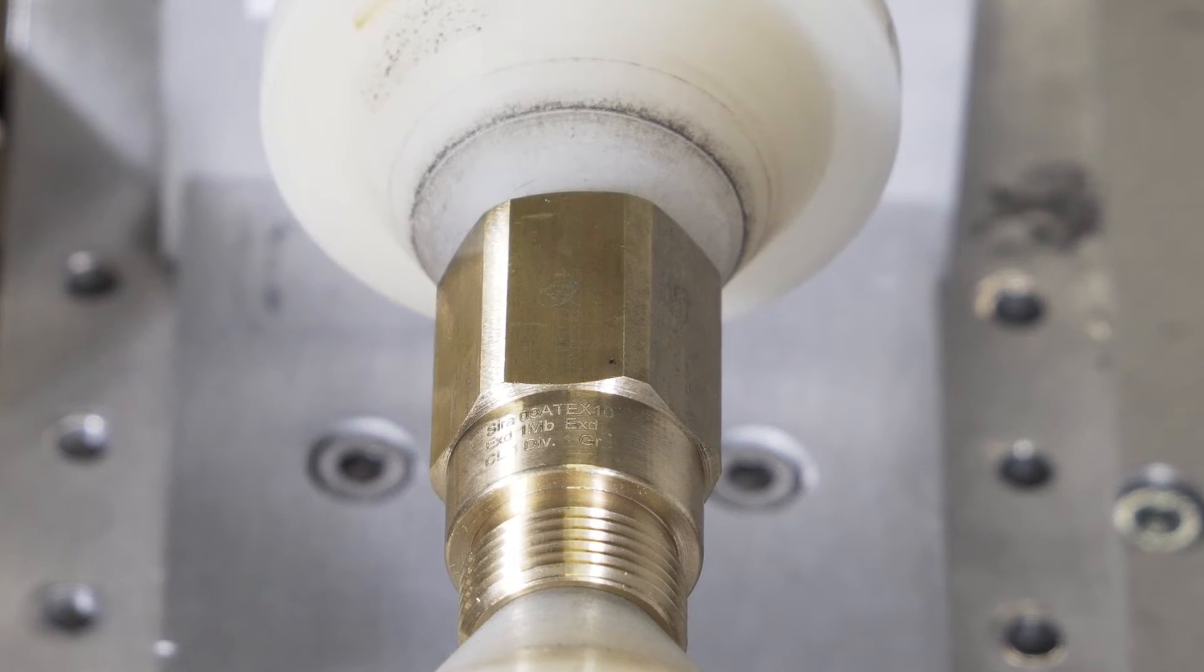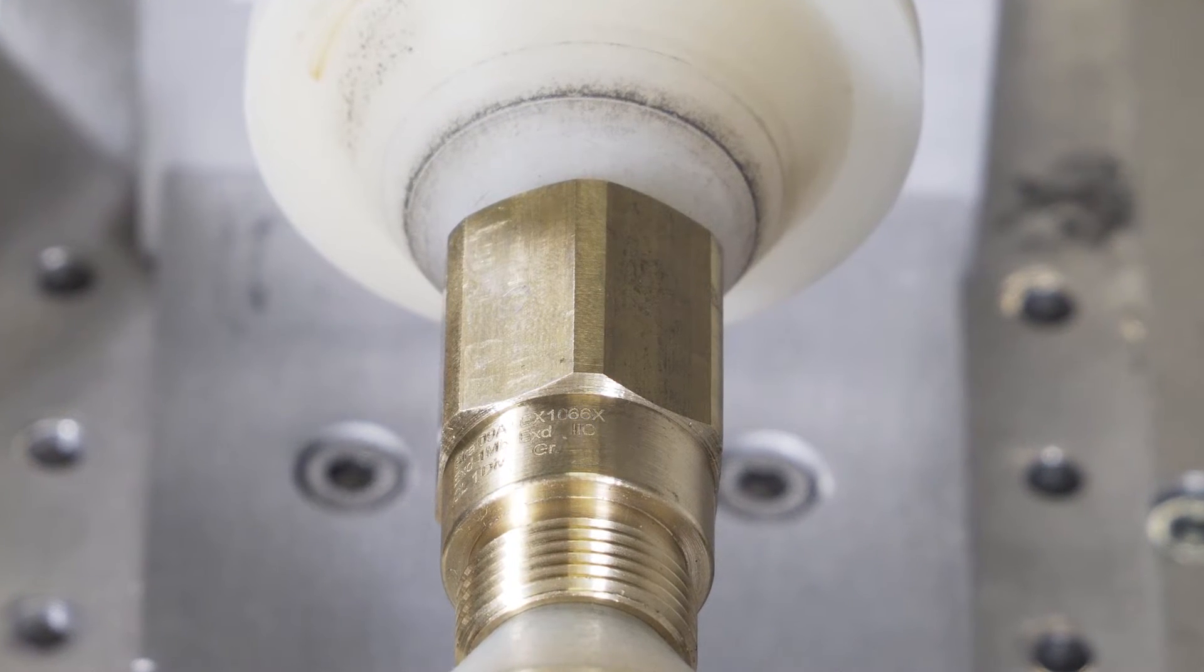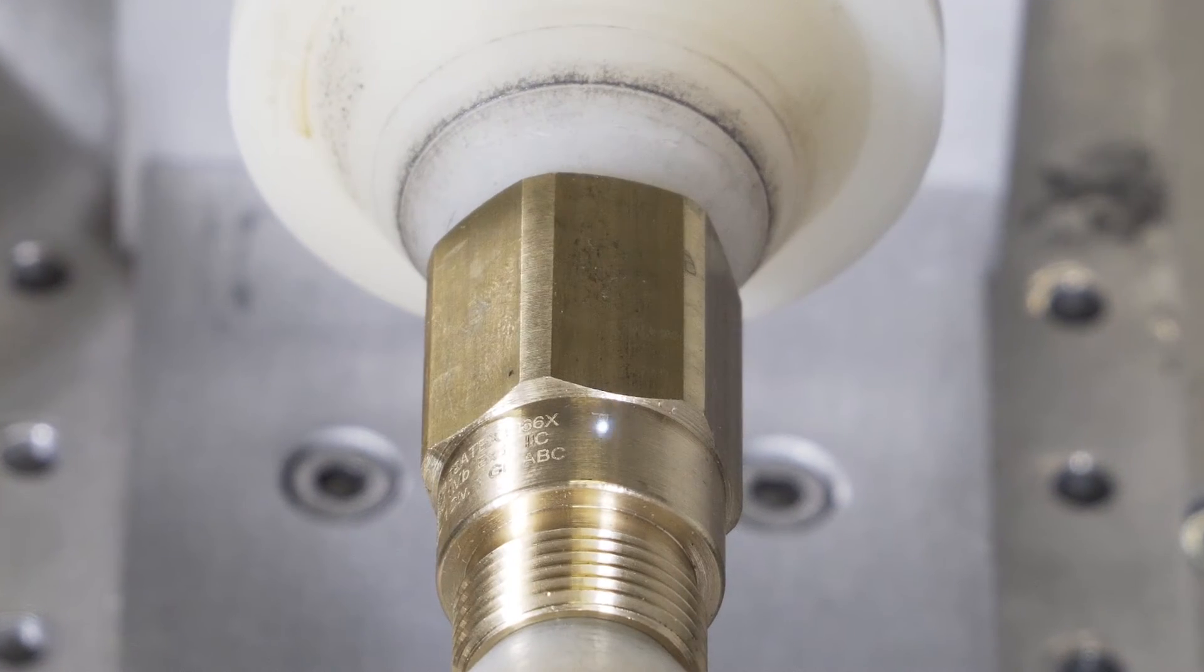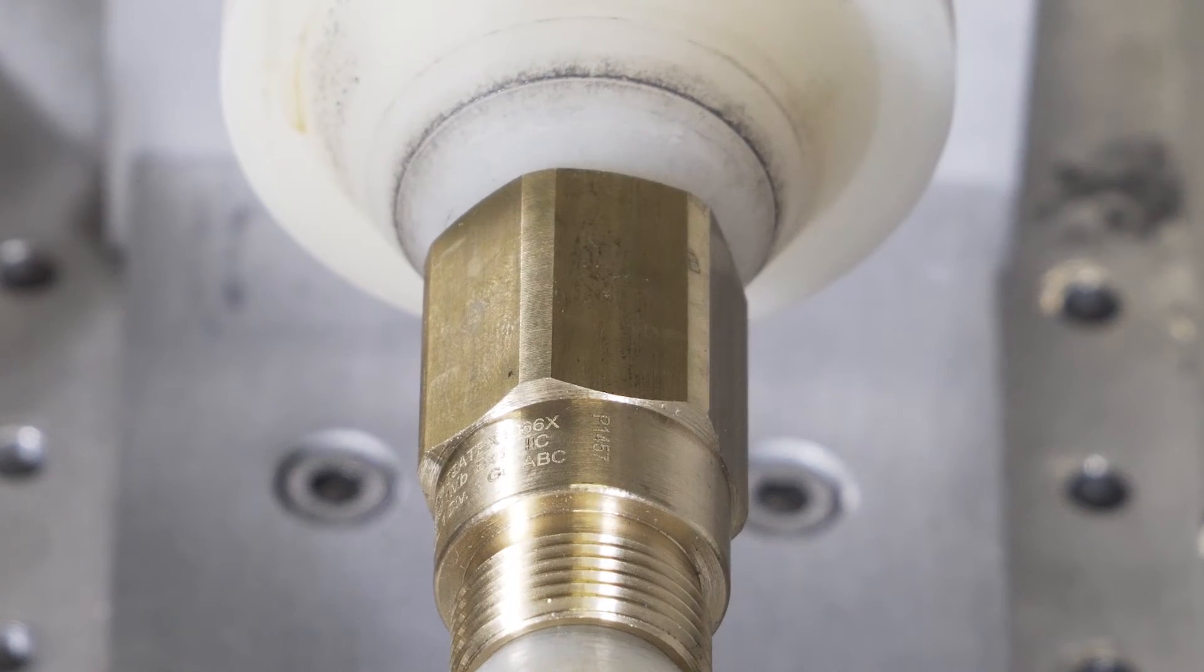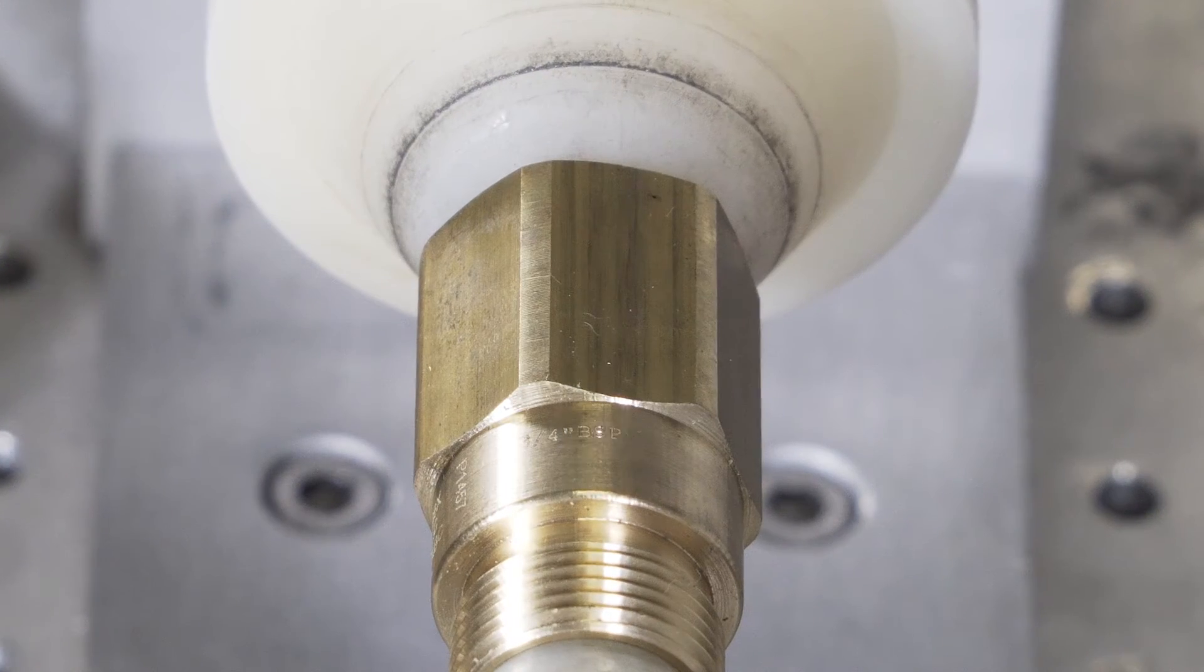Once the first section of data is etched into the brass surface, the rotary indexer rotates to its programmed location when the laser then places the next data string onto the surface. To gain additional depth the process is using two passes on each text string.